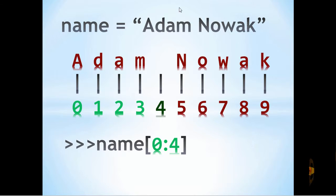If we do want to get the first word, however, from the string Adam Novak, we can put zero to four inside the braces. Remembering in this circumstance, we exclude the value four.